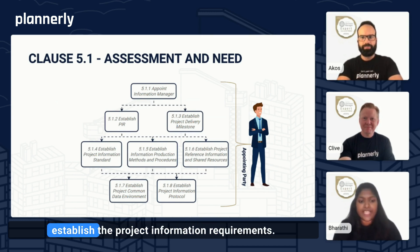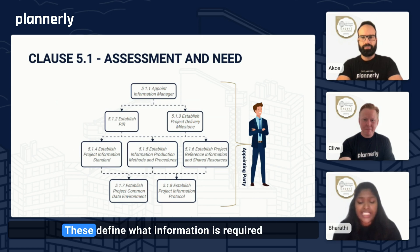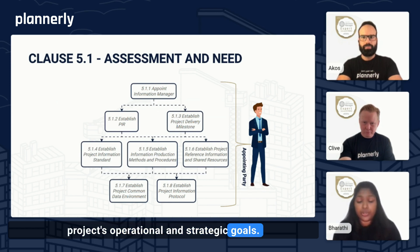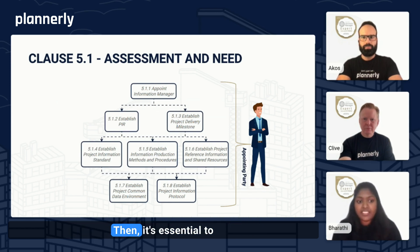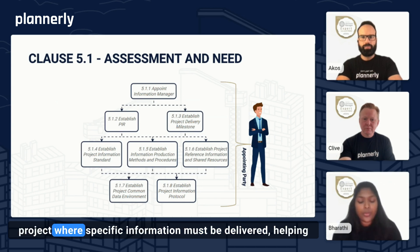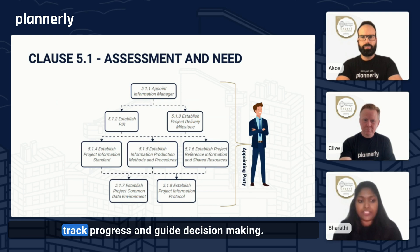Next, you will need to establish the project information requirements. These define what information is required at different stages to meet the project's operational and strategic goals. Then it's essential to set project delivery milestones — the key decision points throughout the project where specific information must be delivered, helping track progress and guide decision making.